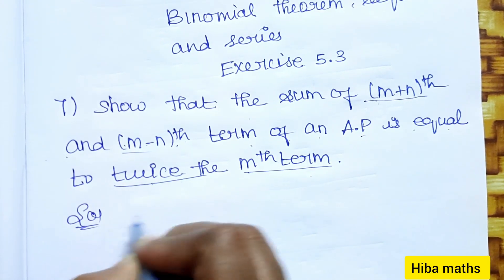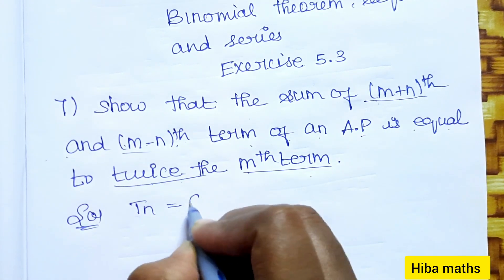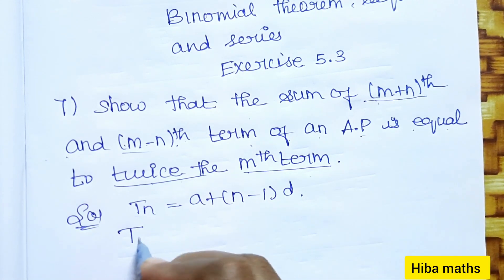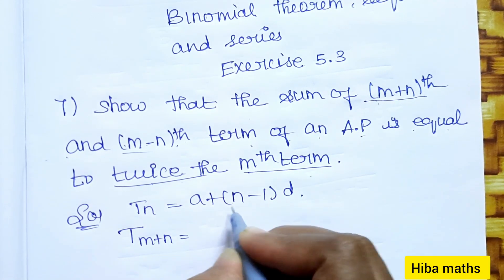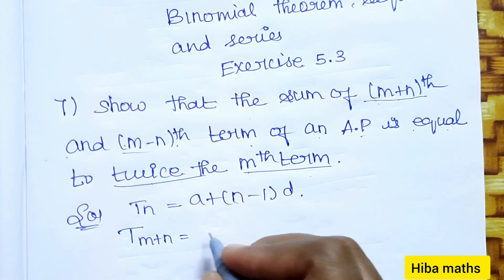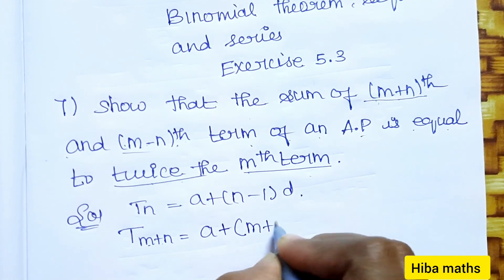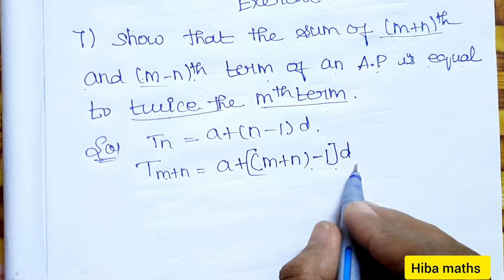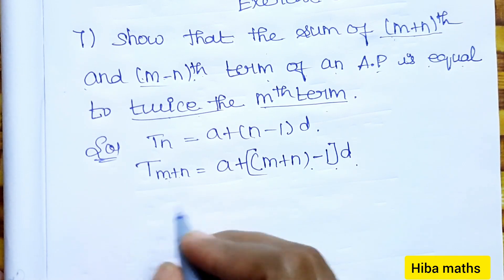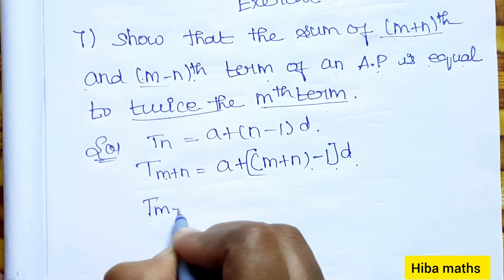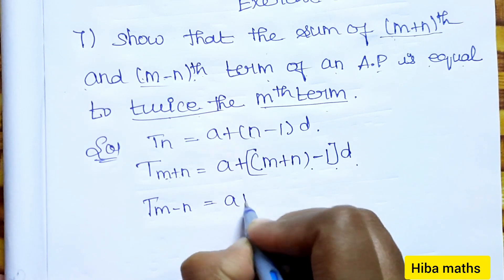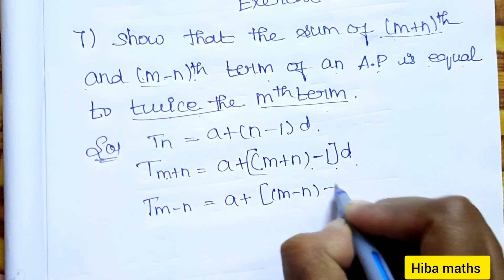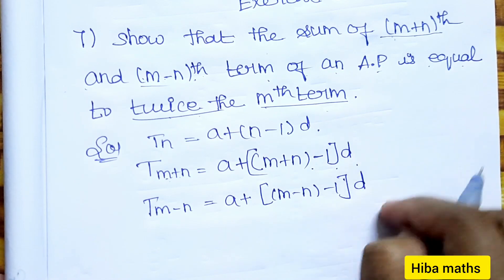In the solution, t(n) is the general term: a plus (n minus 1) into d. So t(m+n) equals a plus (m+n minus 1) into d. This is t(m+n). And t(m-n) equals a plus (m minus n minus 1) into d.